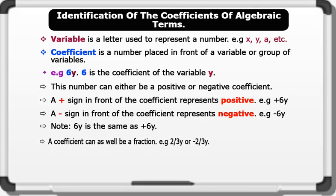A coefficient can as well be a fraction. Examples include 2 over 3Y, or minus 2 over 3Y. That's brilliant.